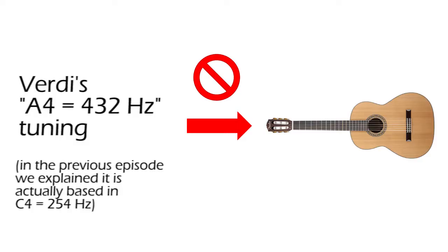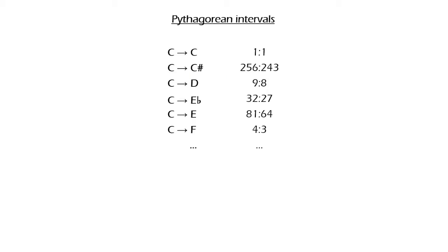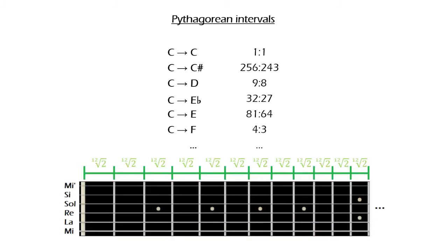When attempting to tune a guitar with Vertus A4 equals 432 Hz tuning, there is a problem that's seldom considered. This tuning has just intervals, specifically Pythagorean intervals, while guitar frets are spaced in equal temperament.